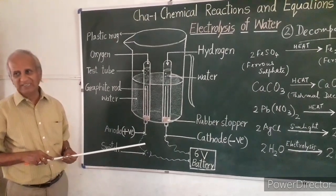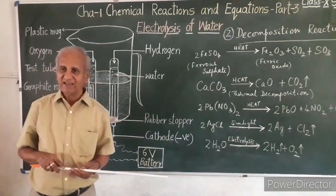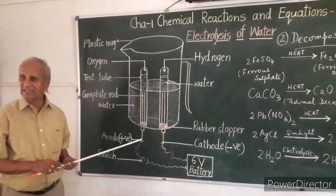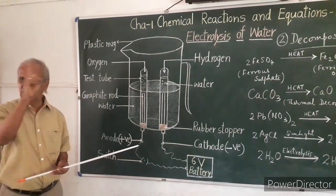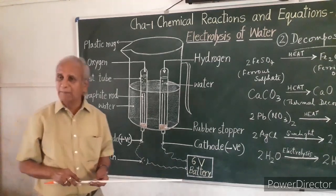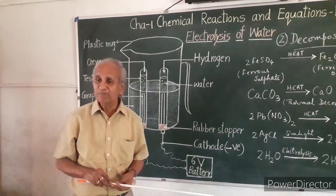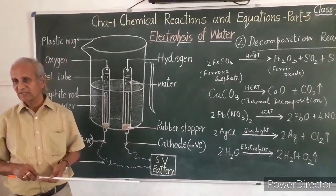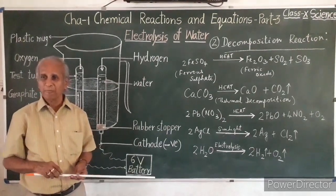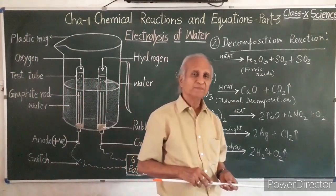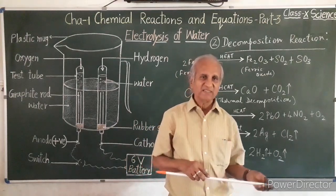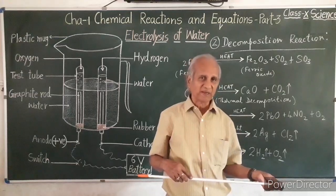I will call you a scientist if you take up the endeavor of preparing your own voltameter and extracting hydrogen and oxygen by electrolysis of water. In the next video we will take up the third and fourth types of chemical reactions — chemical displacement and chemical double decomposition — and also oxidation, reduction, rancidity, and connected things. That should be our last video for this particular chapter. Thank you.